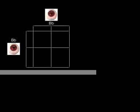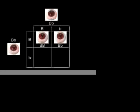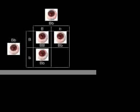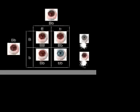Let's go back to brown eyes versus blue eyes. In this example, we're going to combine two heterozygous brown-eyed people. Heterozygous means that our genotype is capital B, lowercase b. Both individuals have brown eyes and the exact same genotype — same genotype, same phenotype. The result of this combination will be one homozygous offspring with brown eyes, two heterozygous offspring with brown eyes, and one homozygous offspring with blue eyes. This couple has a 75% chance of having a child with brown eyes and a 25% chance of having a child with blue eyes.